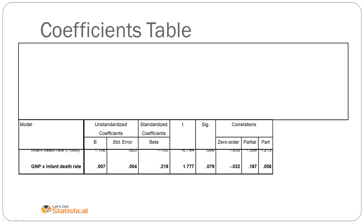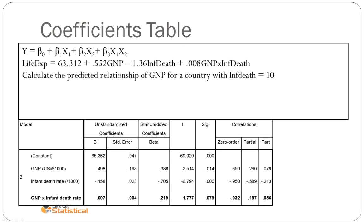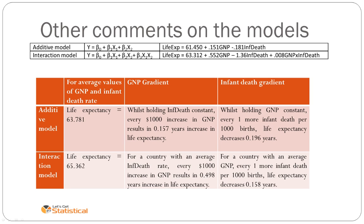Moving on to what else we can do with this, we can also do things like look at the relationship of gross national product for a country with infant death equal to 10. So this is holding infant death equals 10 at a constant, then looking at the relationship between gross national product and life expectancy. And we end up with the formula over there. Other comments on the models, we can still say the same about the additive model and the interaction model. We can comment on the gradient of both. We can comment on the y-intercept in exactly the same way.